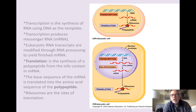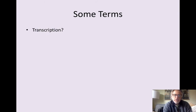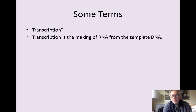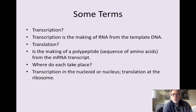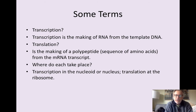I should also mention that ribosomes are the site at which translation happens. Transcription is the making of RNA from the template DNA. Translation is the making of a polypeptide, which is just a sequence of amino acids strung together in chain-like fashion from the mRNA transcript. It's important to know where each one takes place. Transcription happens in the nucleus, or if it's a prokaryotic cell in the nucleoid, and translation at the ribosome in the cytoplasm.